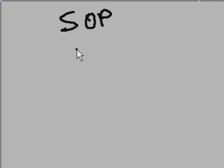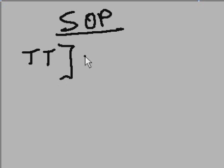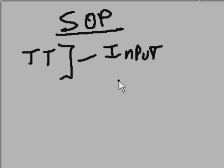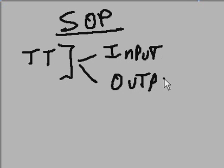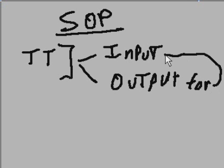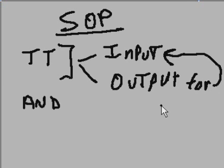We want to talk about sum of products. First off, what's a truth table? A truth table is going to show us all the input combinations and the outputs for all those input combinations. For example, if you had two truth tables over here — one for an AND gate and one for an OR gate.